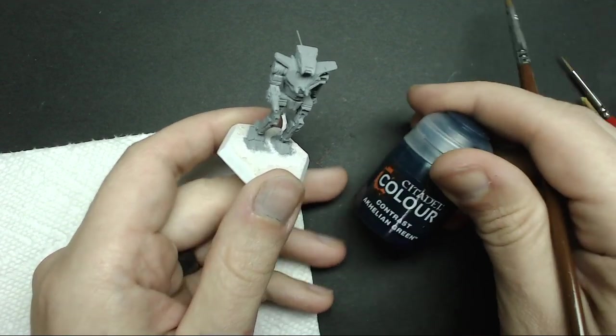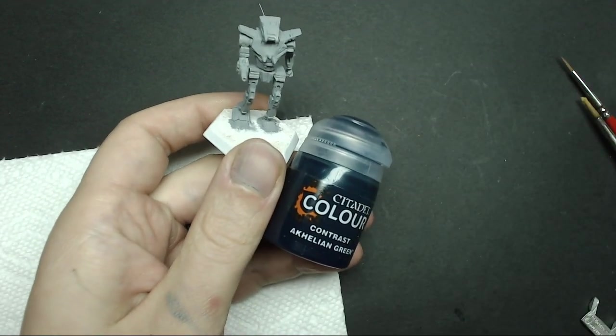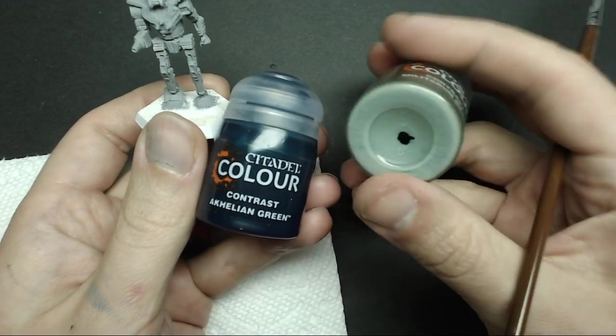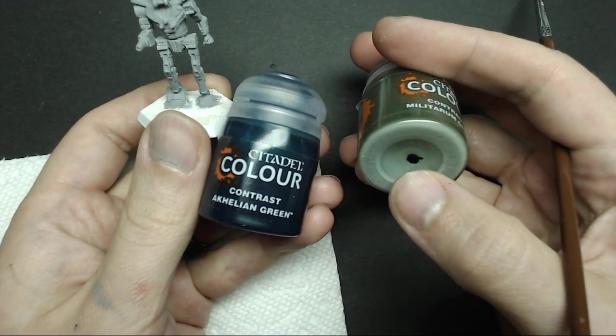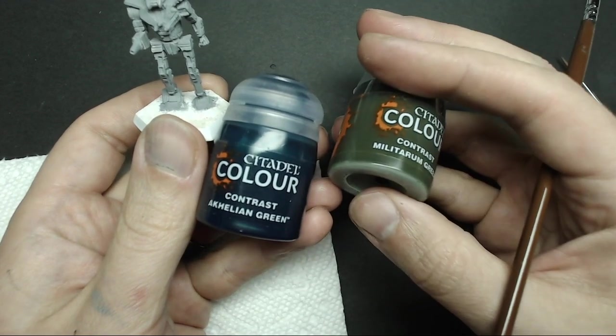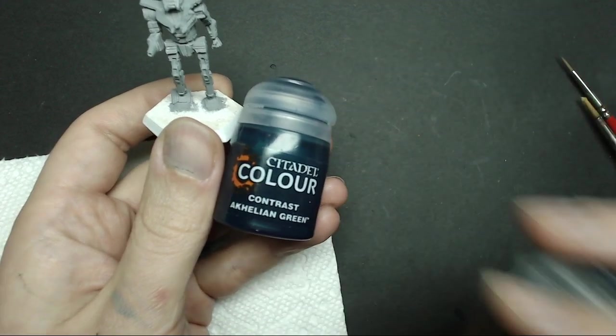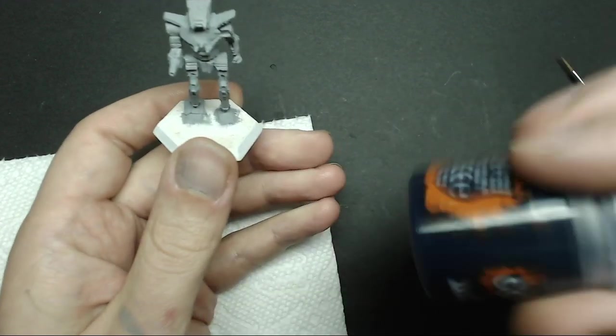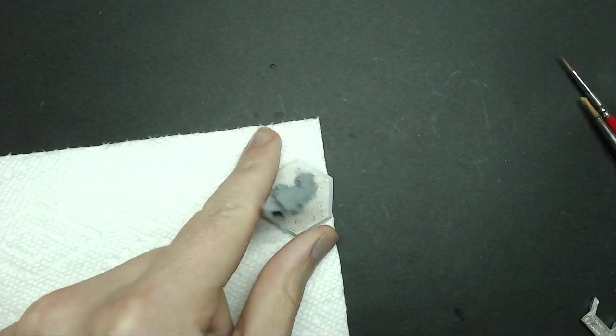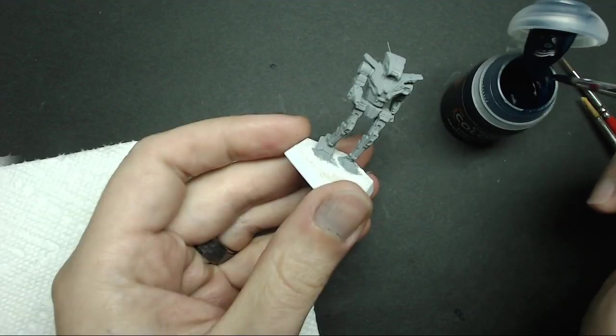Another thing about contrast paint you want to look out for is the fact that it settles really quickly. I've found that this little layer that you get on the bottom of these paints forms pretty quick. So you want to shake those up every time you use them. I threw a little piece of sprue in the bottom to agitate them and make sure that's all mixed up. Make sure you shake them every time you open up the pot.